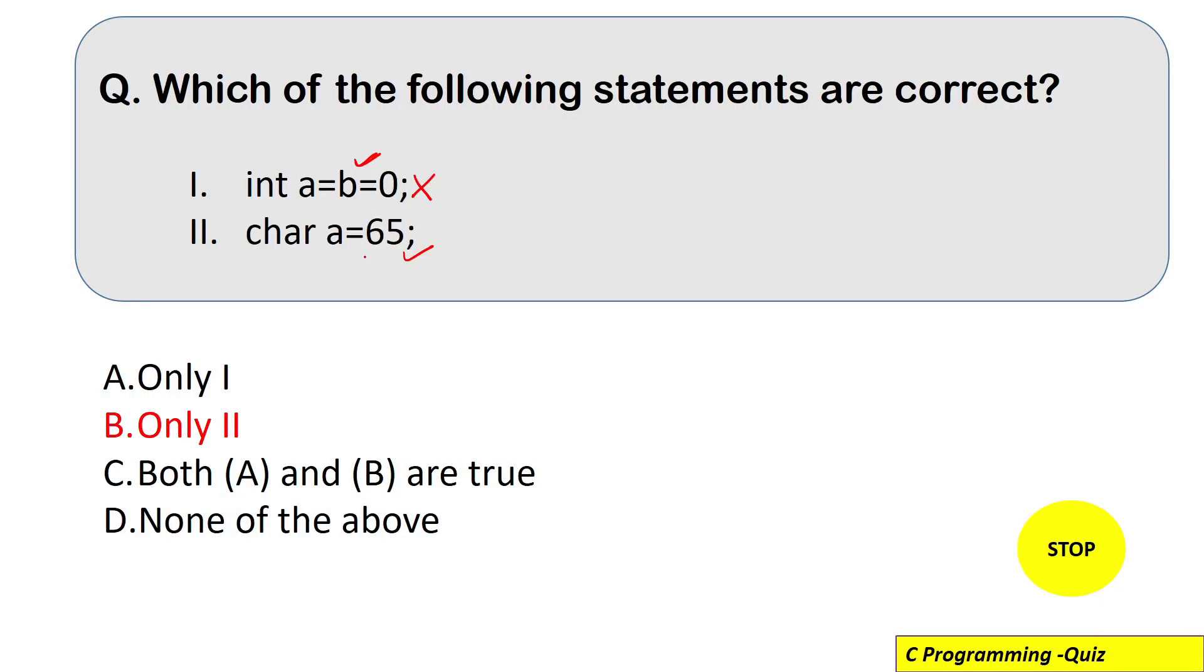Now second statement is obvious. This is just defining a character variable a using the 65 value. Now why this second statement is correct? That is char a equal to 65.